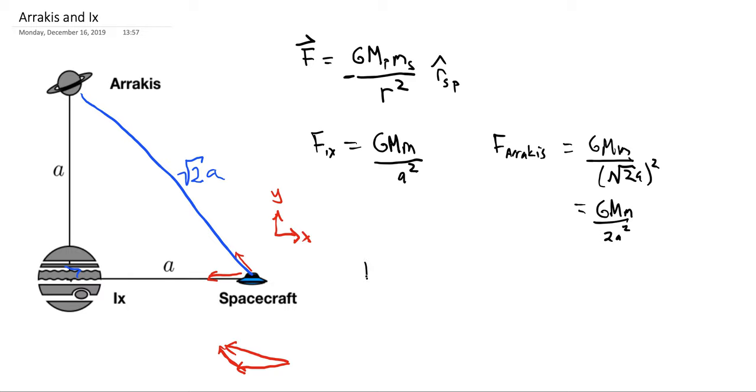What we're going to have is that the force of Ix is going to be equal to minus Gmm over a squared in the x hat direction. The force of Arrakis is going to be minus Gmm over 2a squared times the cosine of the angle between them. So I'd say that is the angle theta. So the cosine of the angle in the x hat direction, plus Gmm over 2a squared sine theta in the y hat direction. Okay, so given these pieces we can go ahead and start to solve things out.